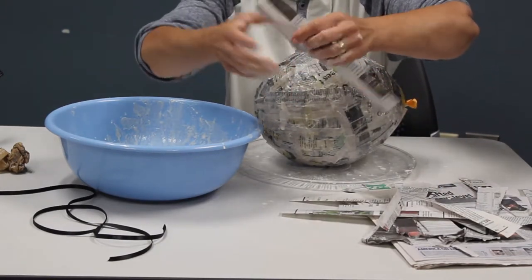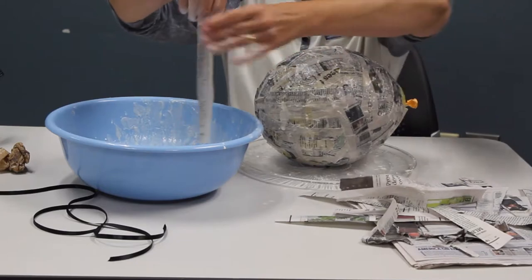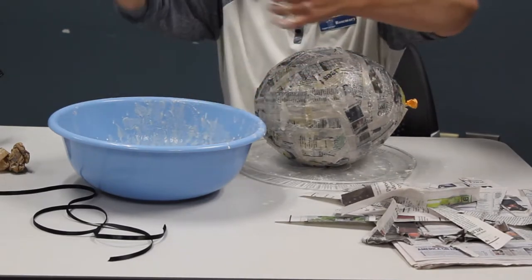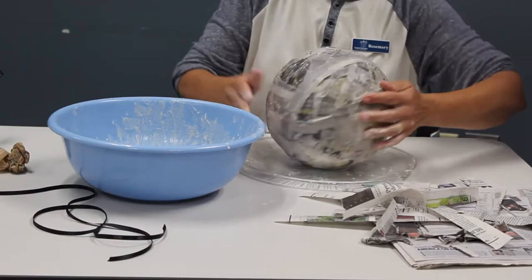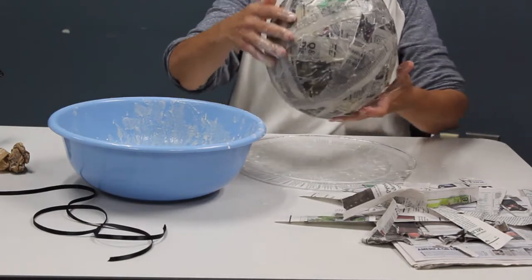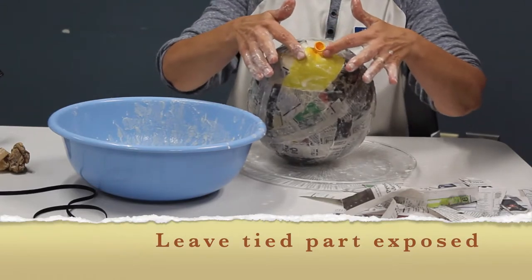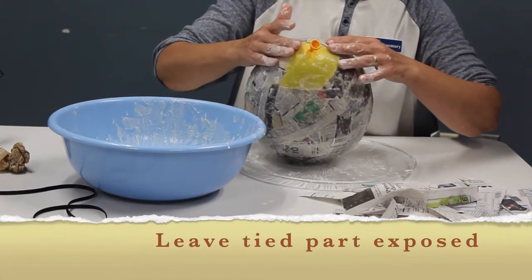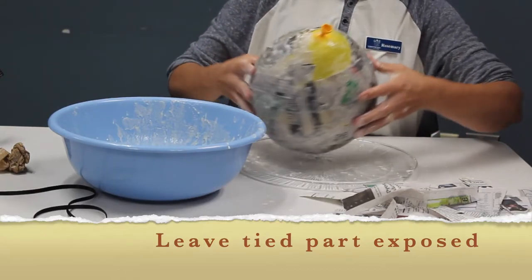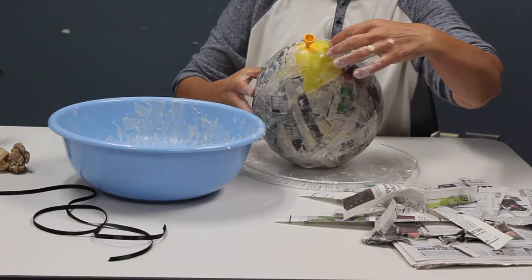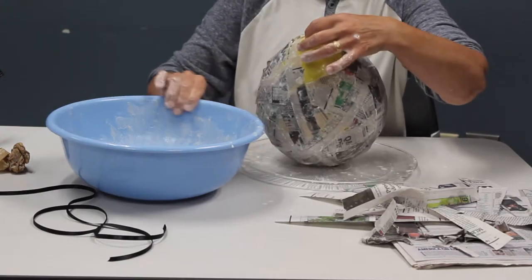But what is important in the first layer is that you're going to attach the strings underneath the papier-mâché so that you can hang it. So we don't papier-mâché all the way up because this top part, once it dries, we're going to pop this balloon. And that's where you're going to be able to fill your piñata with goodies.